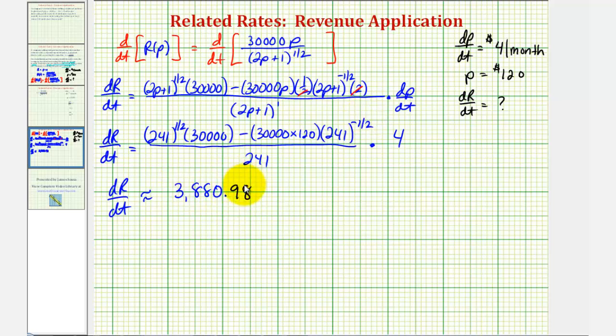So under these conditions, we can say the revenue is increasing at a rate of $3,880.98. And this would be per month.